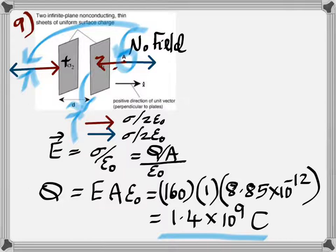But inside you have intensity which is in the same direction due to both. So both of them add up and you get Q by A epsilon naught. So the charge is 1.4 times 10 to the 9 coulombs. And thank you so much.